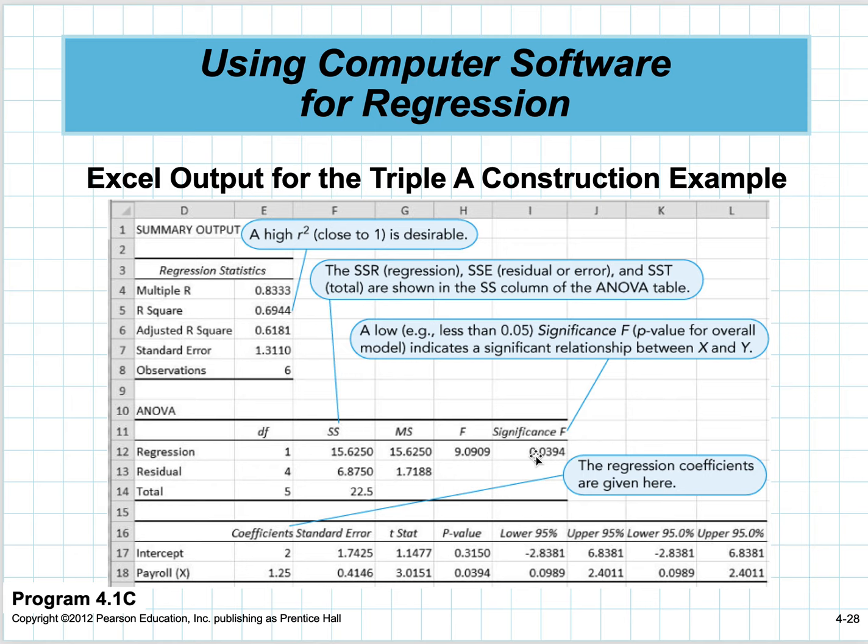Here are the coefficients. You can do a t-test on each individual variable—there are only two. The F-test significance and the t-test p-value are the same when there's only one predictor variable.